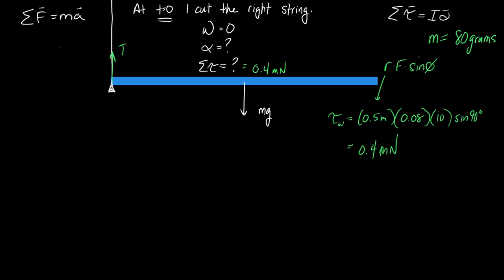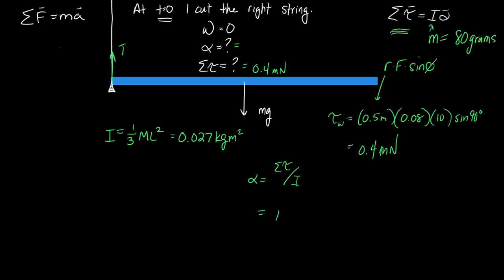Now we need the angular acceleration. You know the net torque, so find the moment of inertia — doing torque always requires that extra step. Acceleration is simply net torque divided by moment of inertia, and we get 15 radians per second squared. The units work out: torque in newton-meters divided by moment of inertia in kilogram-meters-squared leaves radians per second squared.